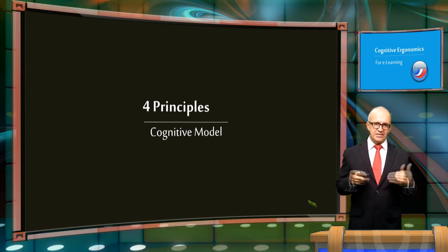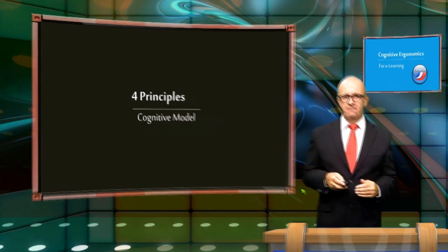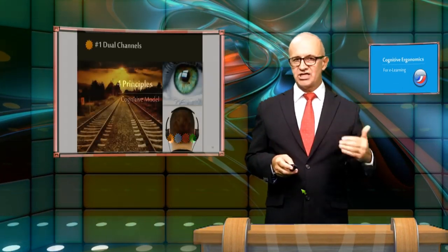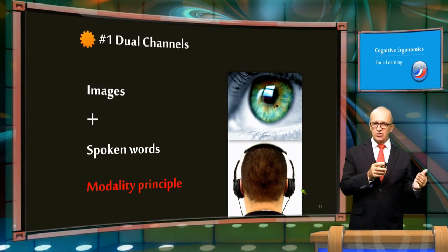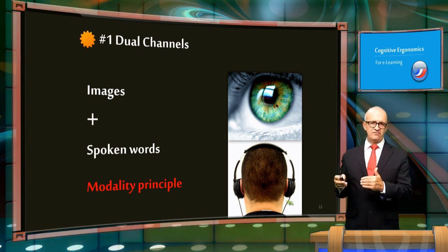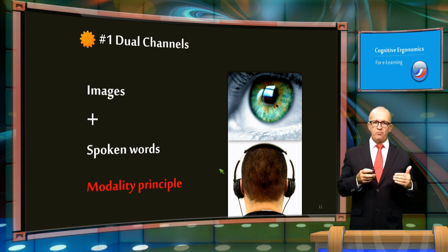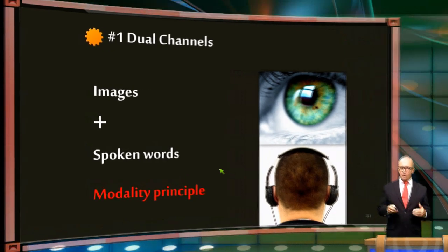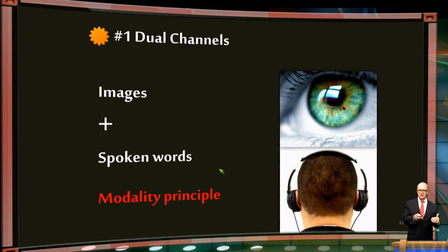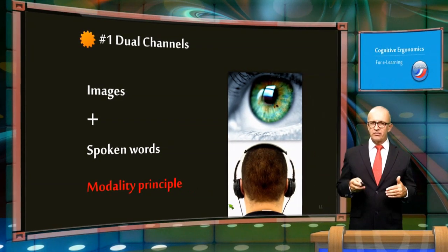It is possible to identify four principles in the cognitive model. The first principle is dual channel. We have separate channels for processing visual pictorial material and auditory verbal material. Learning is therefore facilitated when we apply both of these channels. For example, people learn better when we use spoken words instead of printed words to support images and graphics. This principle is called the modality principle.